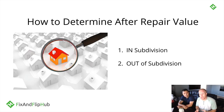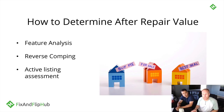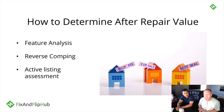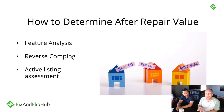I always start inside the subdivision where the house is located because it's a waste of time to go outside if there are six, eight, or ten comps inside — that's what an appraiser will do. If there's a lack of comps, then I'll go outside the subdivision. I'm looking for three things: a feature analysis, reverse comping, and active listings so I know my competition.